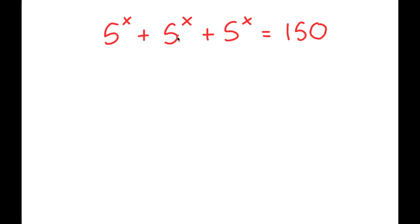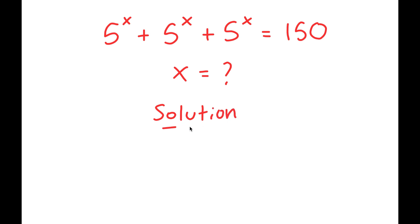My only variable in this equation is x, so that's what I'm solving for. For my solution, what I'm first going to do is factor out 5 to the power of x, because notice how it's repeated three times.